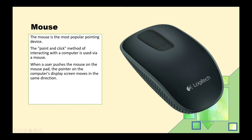If I move the mouse to the left-hand side, the cursor moves to the left side of the screen. Using this pointing device, the mouse pointer or cursor pointer can be used to move around the screen.